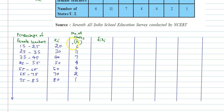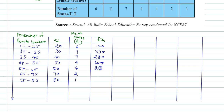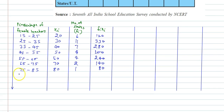Computing FiXi: 20×6 = 120, 30×11 = 330, 40×7 = 280, 50×4 = 200 (implied), 60×4 = 240, 70×2 = 140, and 80×1 = 80.